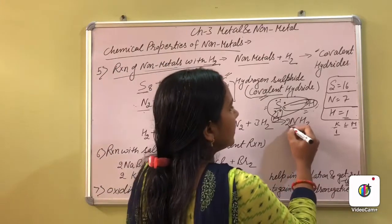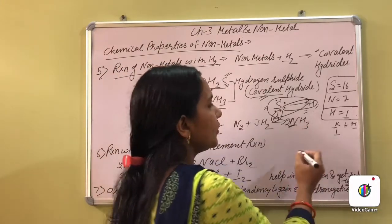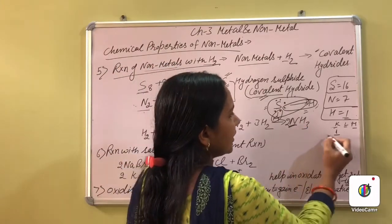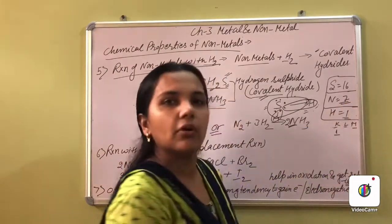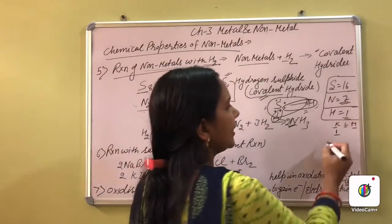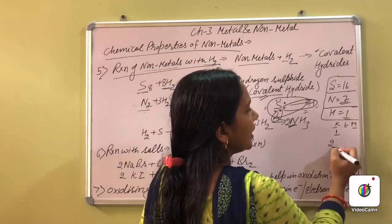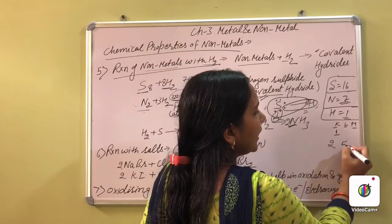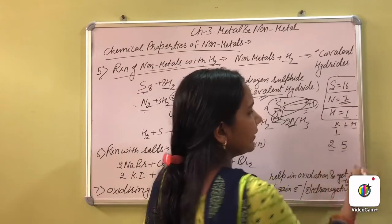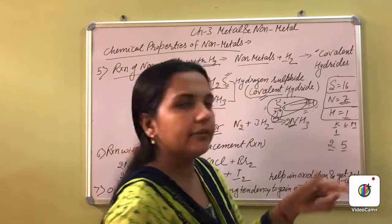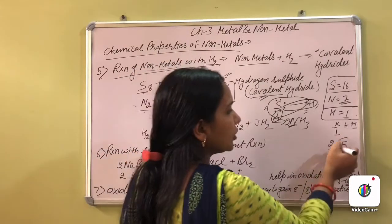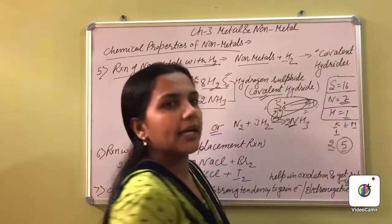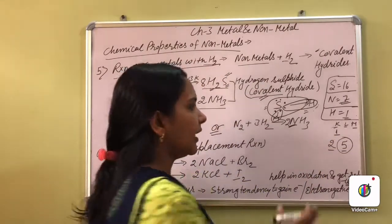Similarly, nitrogen has the atomic number 7. When we write the electronic configuration of 7, it will be: first shell is 2, then 5. So the outer shell of nitrogen has only 5 electrons.